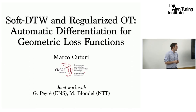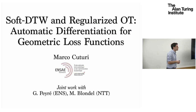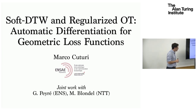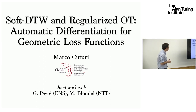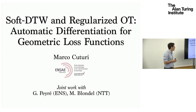In machine learning, we manipulate a lot of structured objects. There have been some interesting distances for some of those structured objects — two in particular. For time series, there is a very famous discrepancy function called dynamic time warping. For histograms or probability distributions, there is something called optimal transport or Wasserstein distance. They have a lot in common: both were proposed in the 50s or 60s, when dynamic programming and linear programming were being developed.